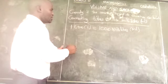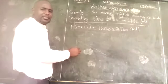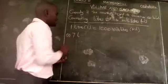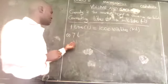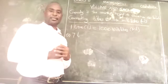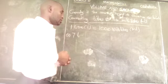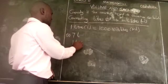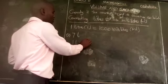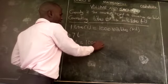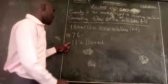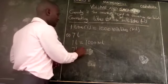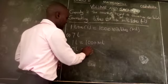So let us look at this example. We have 7 liters. We want to convert 7 liters into milliliters. We shall say 1 liter is equal to 1000 milliliters. How about 7 liters — will give us how many milliliters?